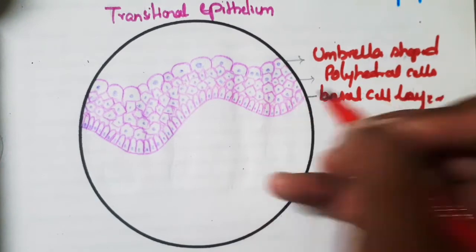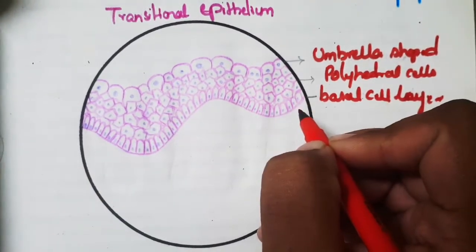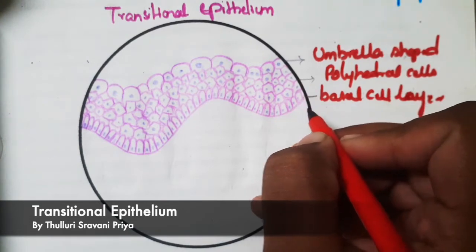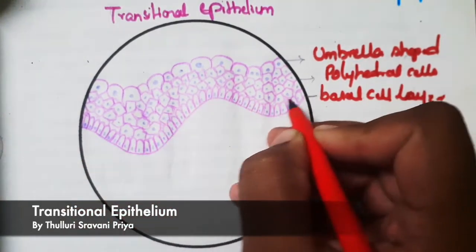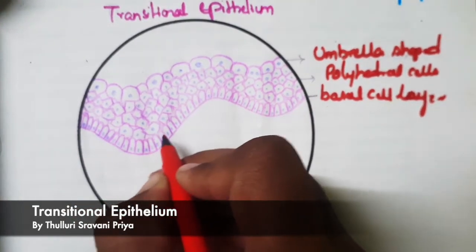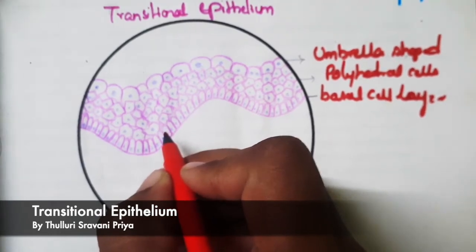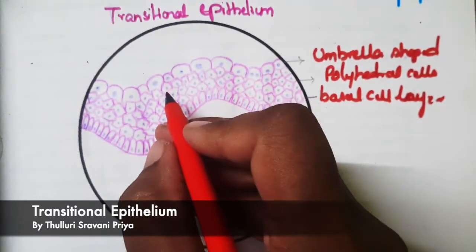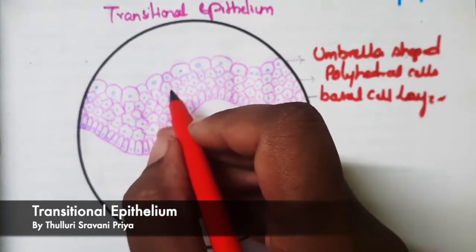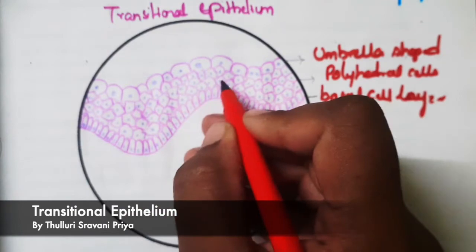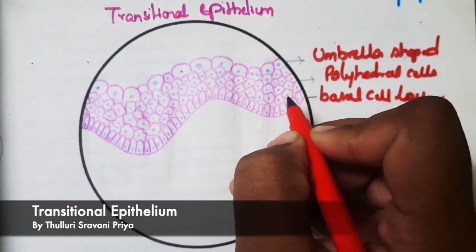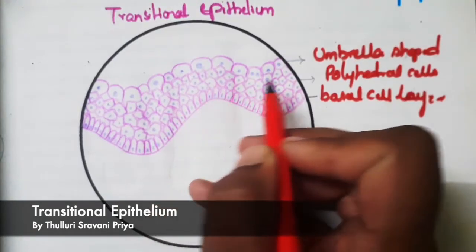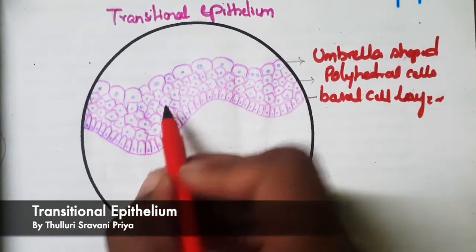In the contracted state, the basal cell layer is made up of two layers of cuboidal or columnar cells, and the superficial cells are mostly flat and squamous in appearance. The appearance of the epithelium in the contraction state resembles stratified squamous epithelium, whereas in the relaxed state it resembles stratified cuboidal epithelium.